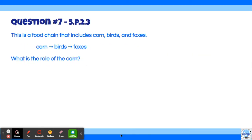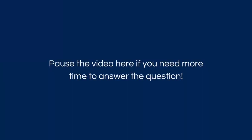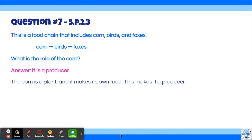Okay, moving on to question number seven. So this is our food chain again that includes corn, birds, and foxes. So what is the role of the corn in the food chain? The answer is that it is a producer. The corn is a plant and it makes its own food. This makes it a producer.